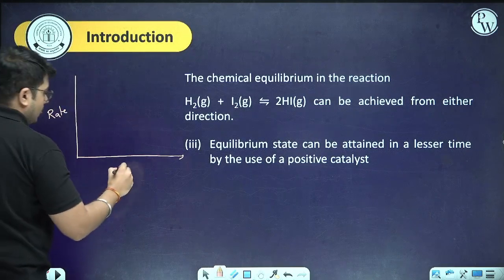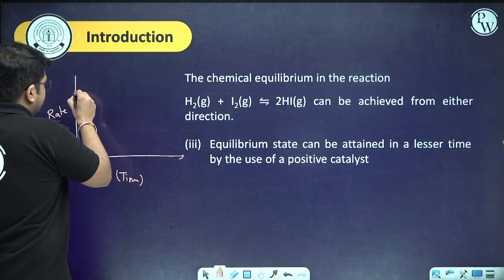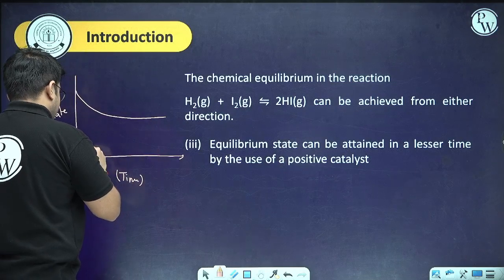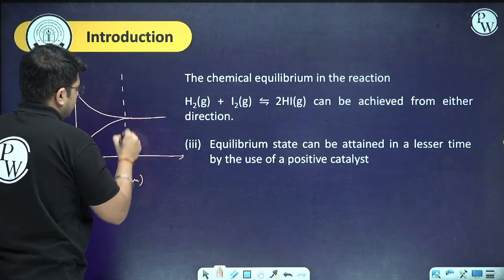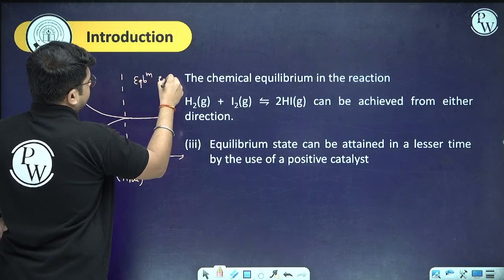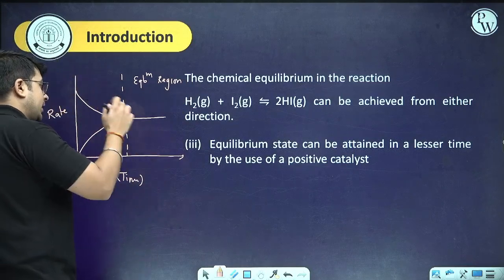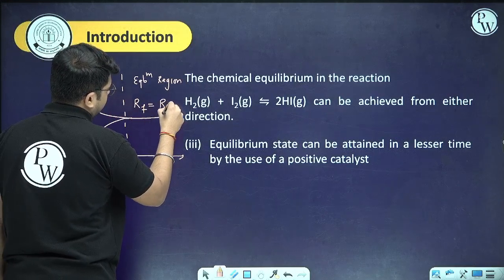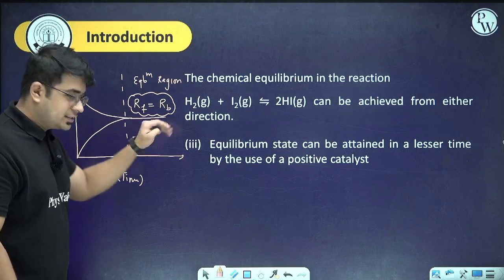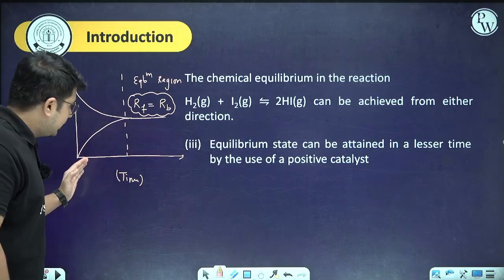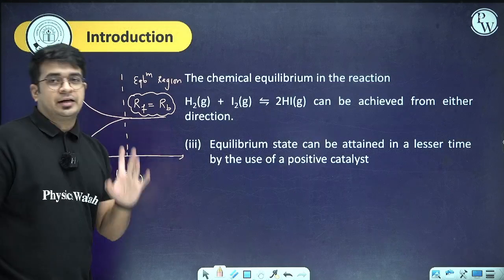For a rate versus time graph: initially the rate of forward reaction is maximum and starts decreasing; rate of backward reaction is very low initially and starts increasing. After equilibrium is established, both become equal — that is the only curve for dynamic equilibrium. Chemical equilibrium can be achieved from either direction, whether starting from reactant or product side.